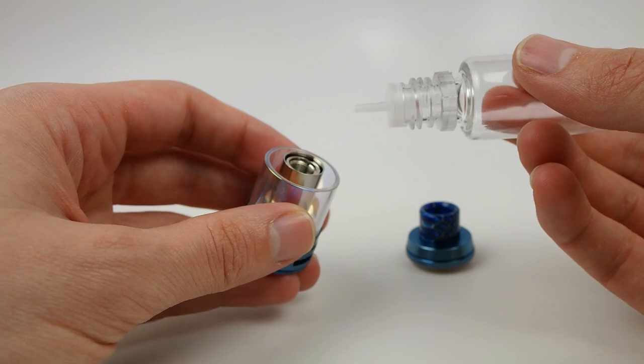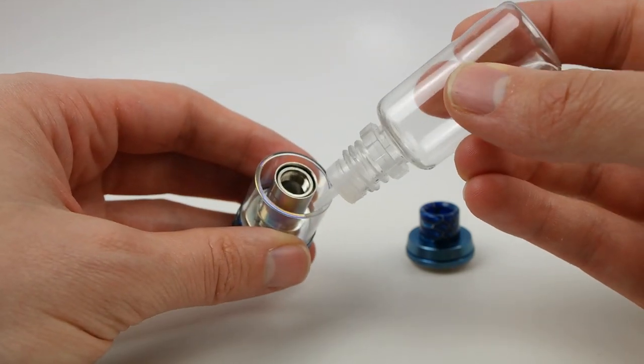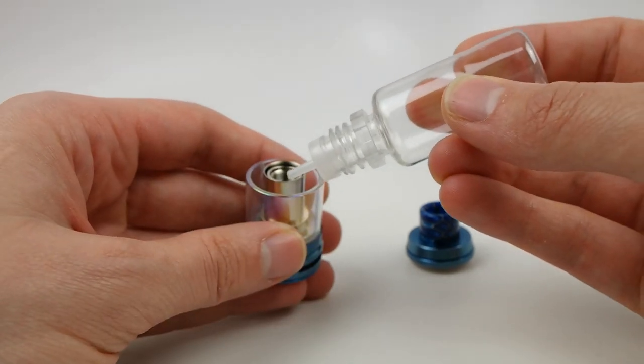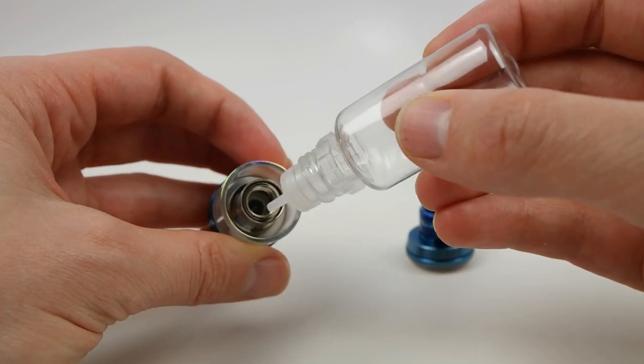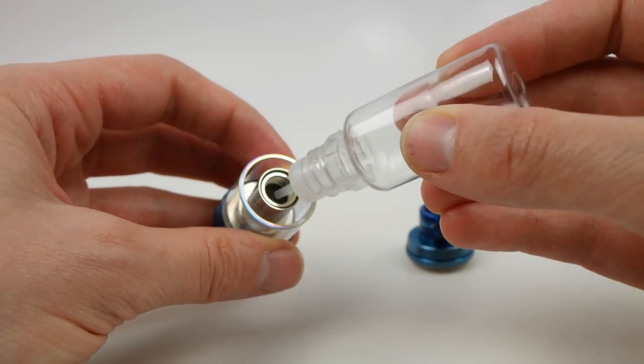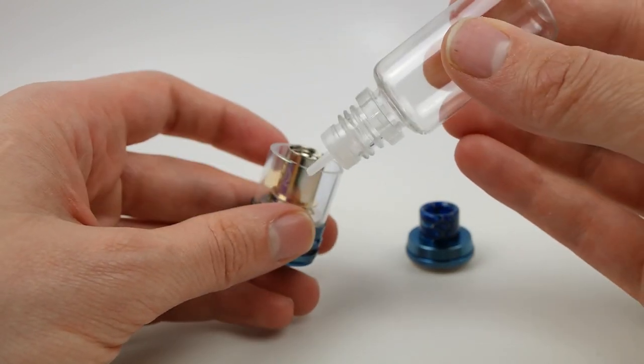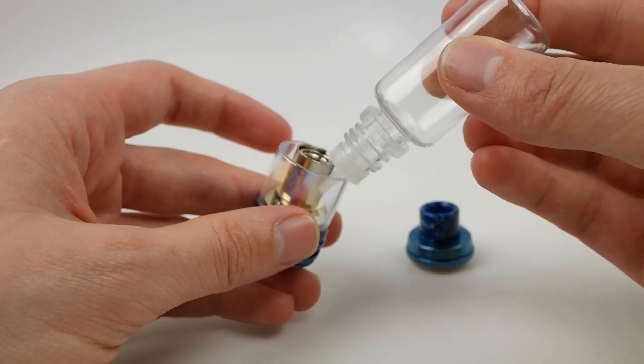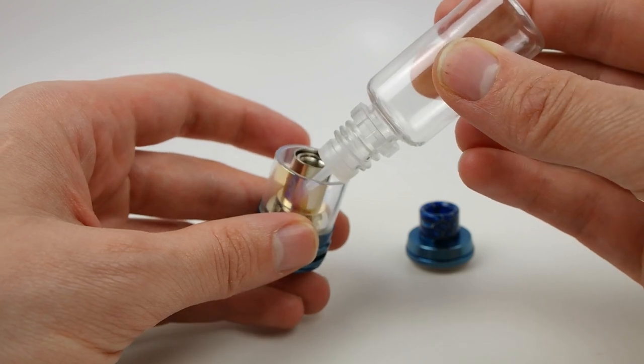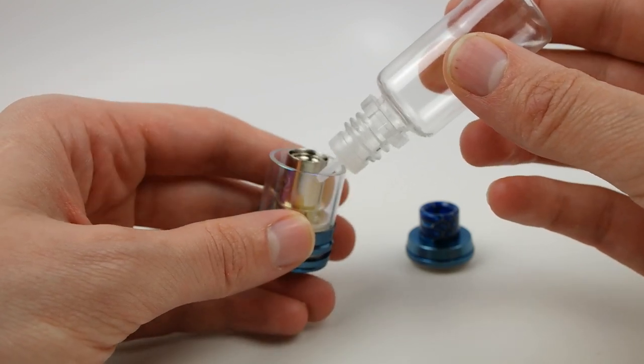You're going to take your juice bottle, and you're going to go in between the glass and this metal chimney. This is your airflow, so you don't want to get juice in here. It will just flood your coil and it won't be a pleasant experience. So just put your tip right in between the metal and the glass, and fill her up to the top.